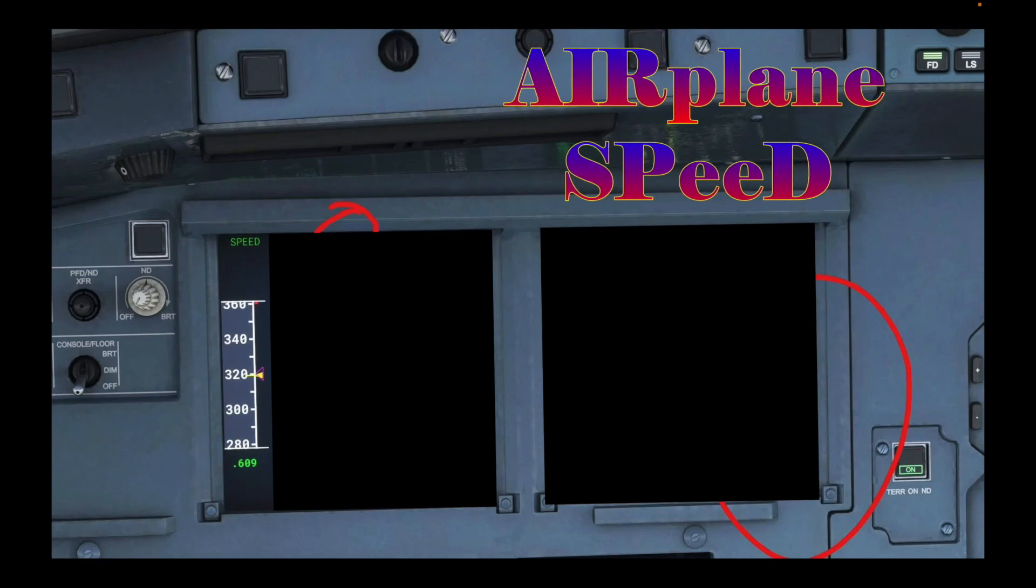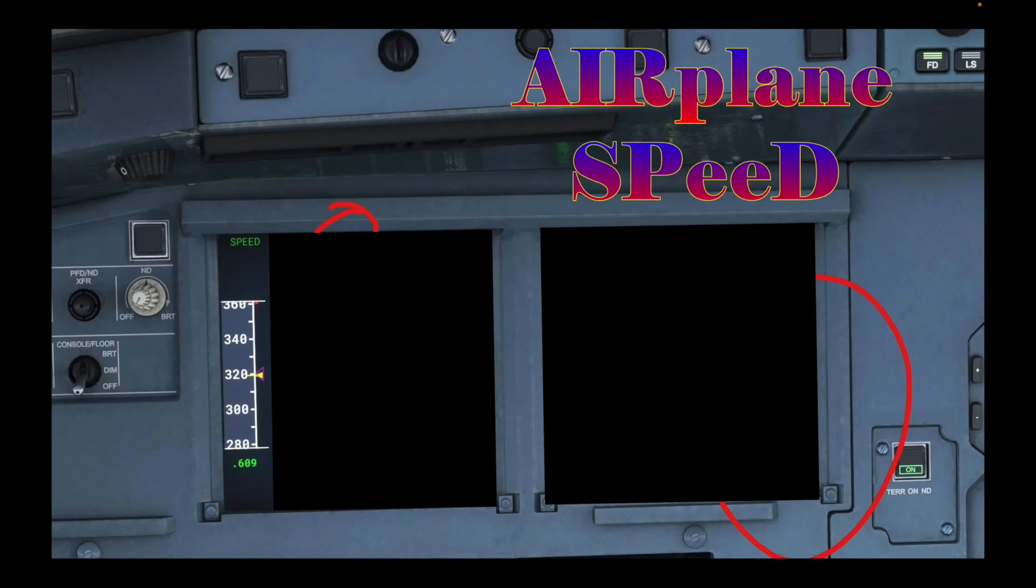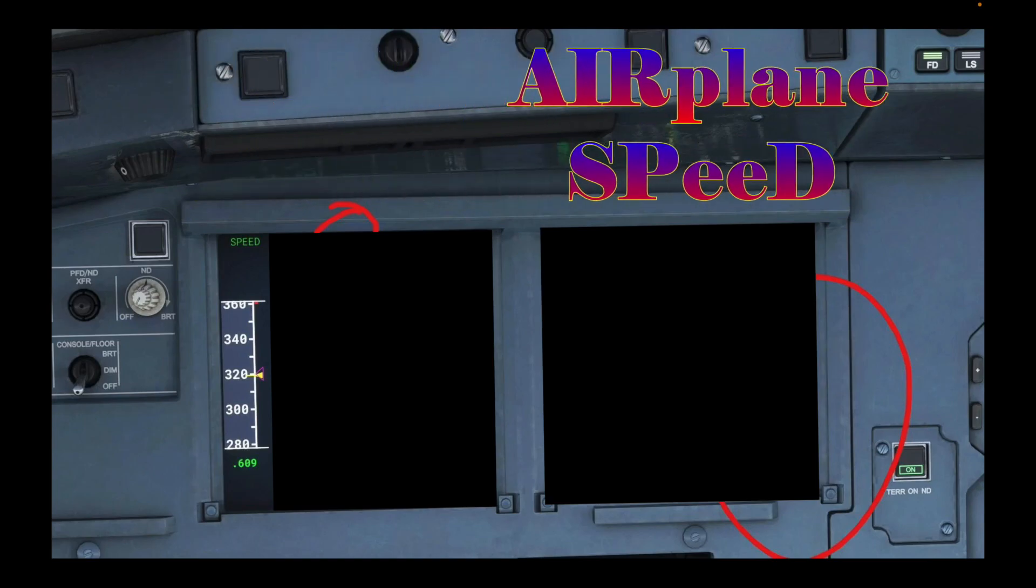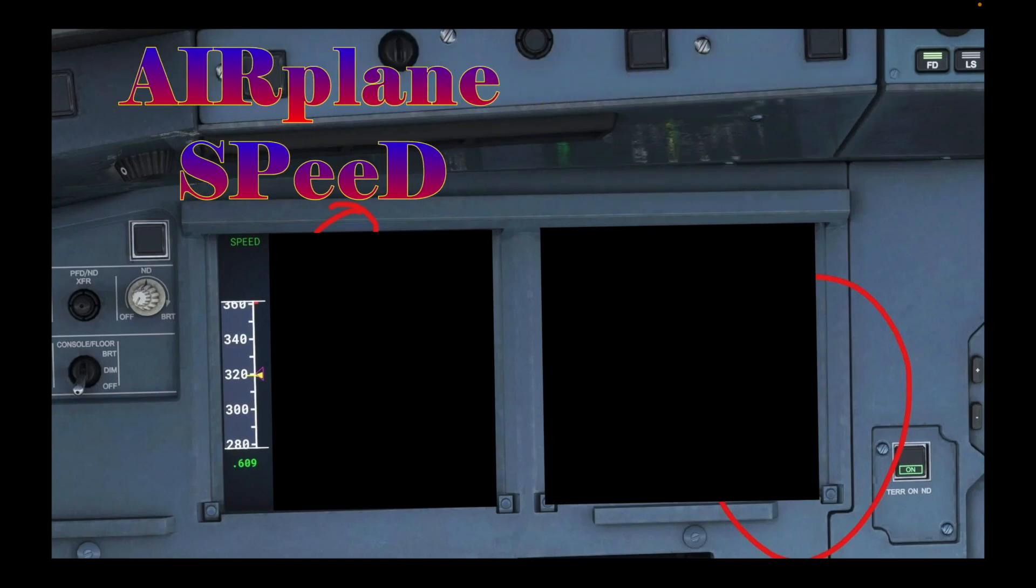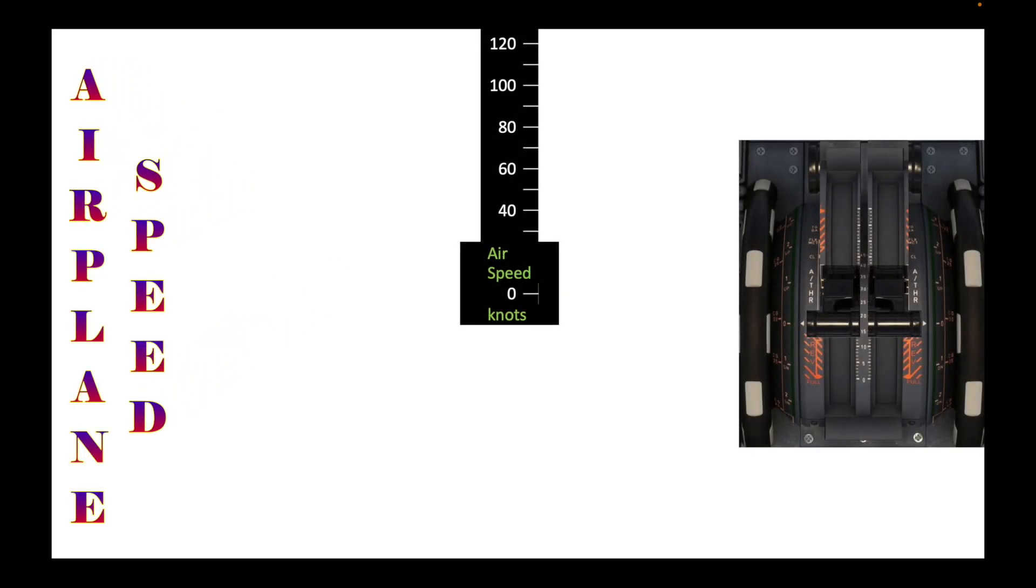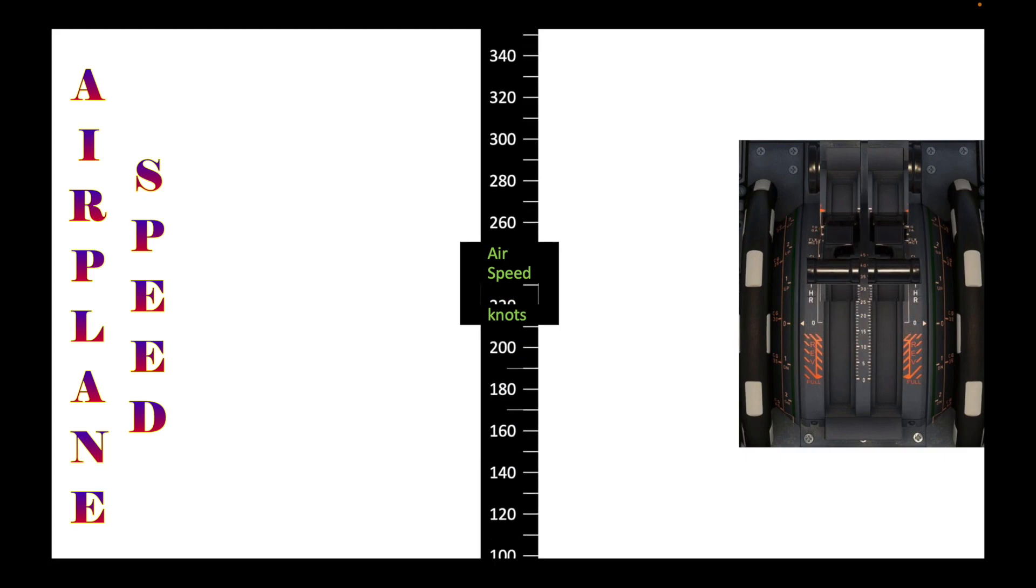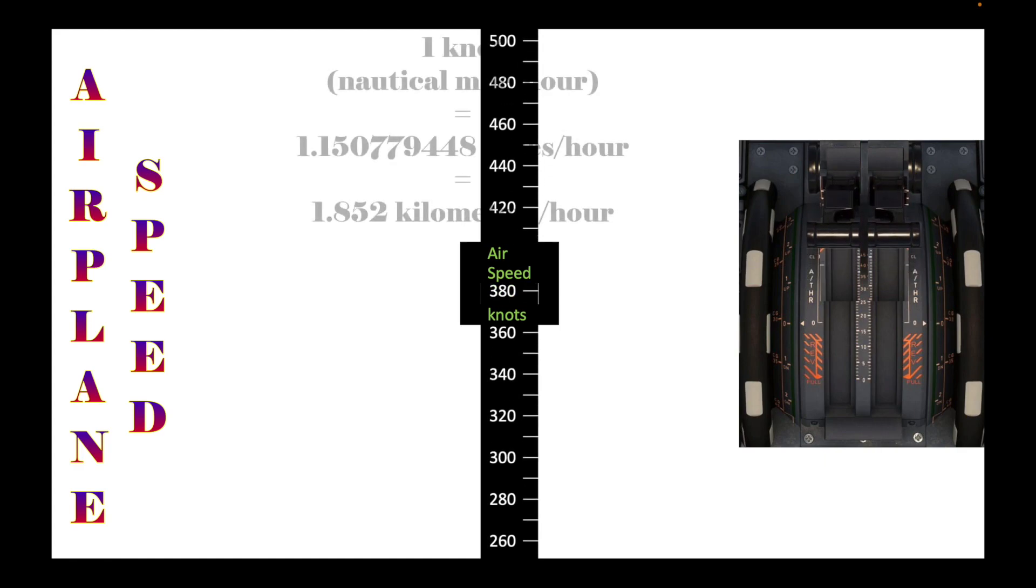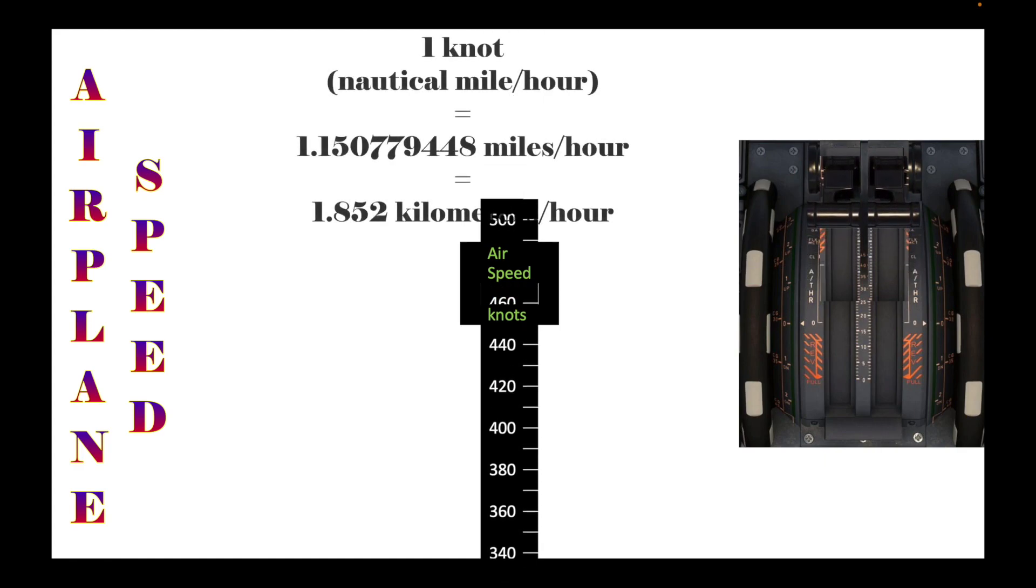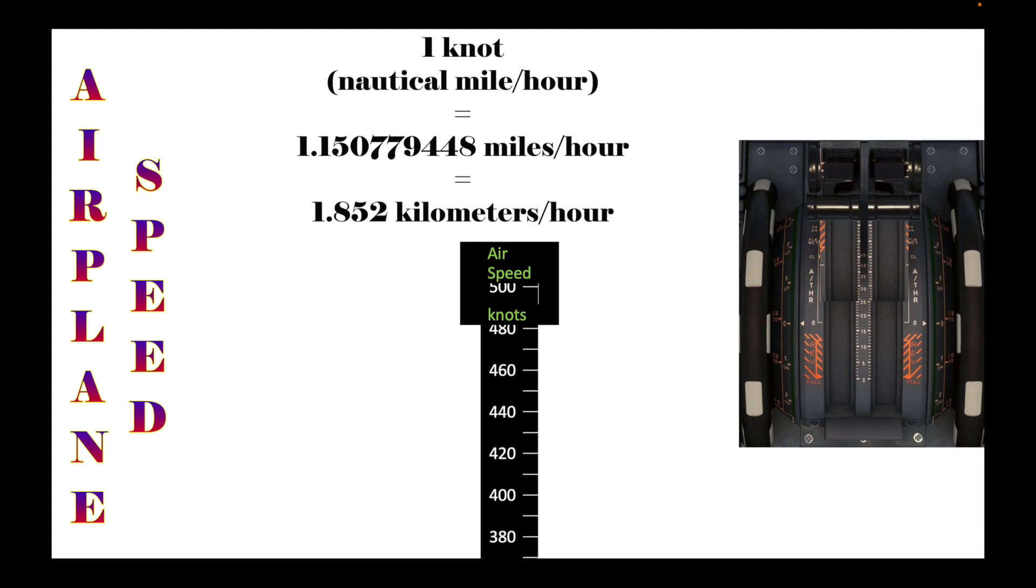The second flight instrument we will be discussing right now is the airplane speed indicator or simply known as airspeed indicator. How fast am I going? This flight instrument shows the speed of the airplane through the air, which it calculates by measuring the difference between total air pressure and static air pressure.